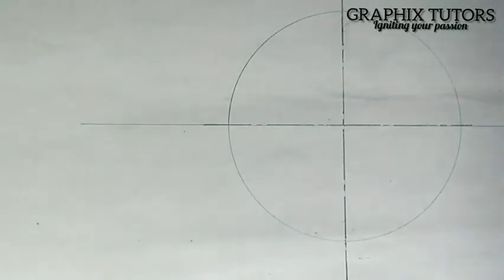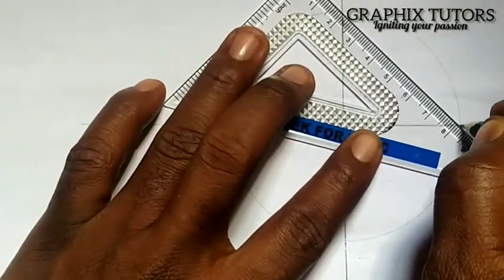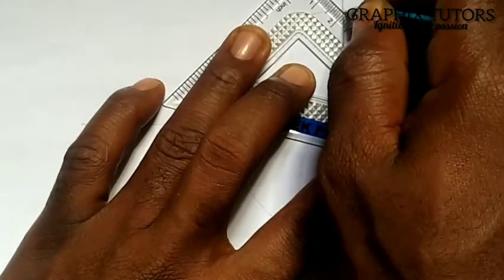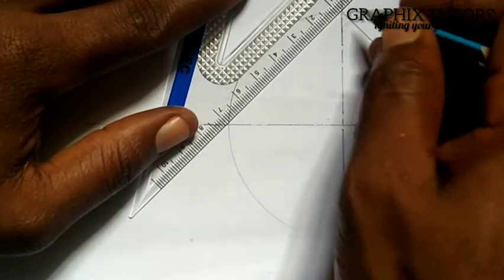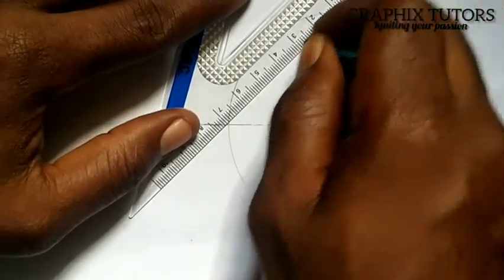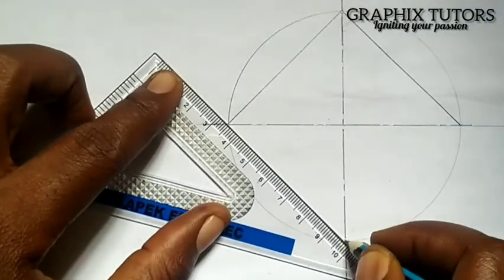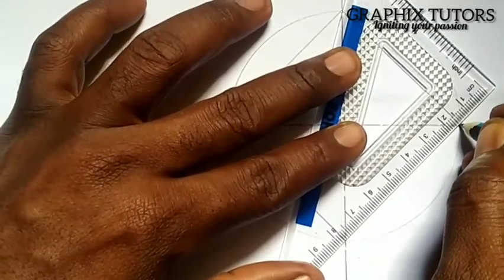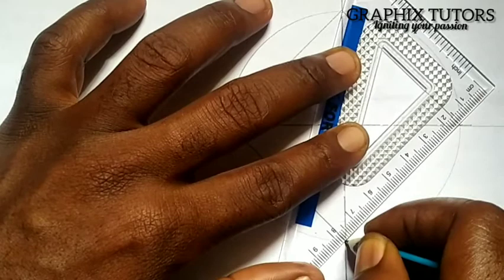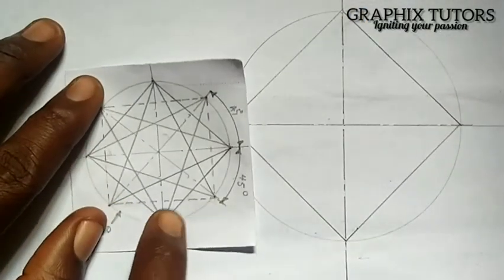So I'll take my set square and I'm going to join from here to here while taking it, as shown in diagram. And I'll join from here to here, as shown in diagram. So I successfully drawn the lines.